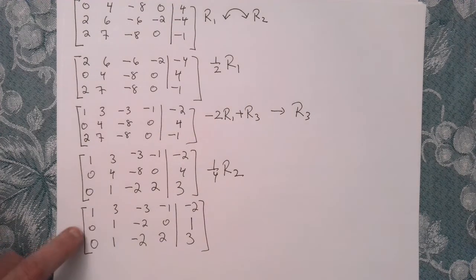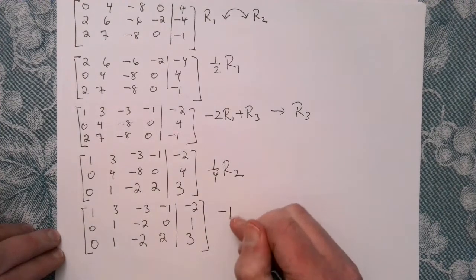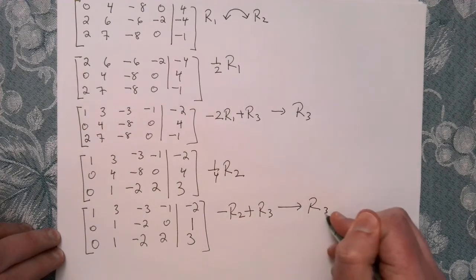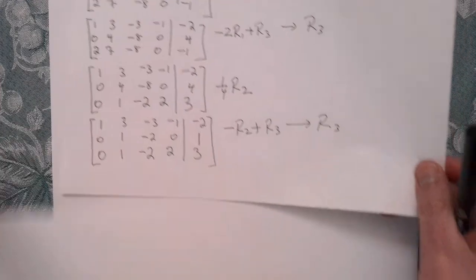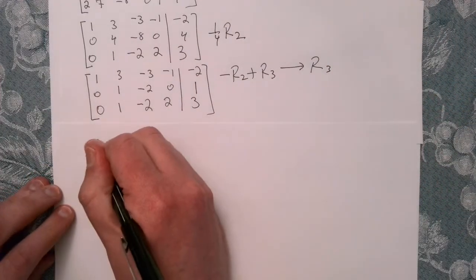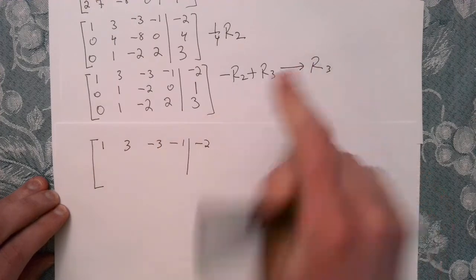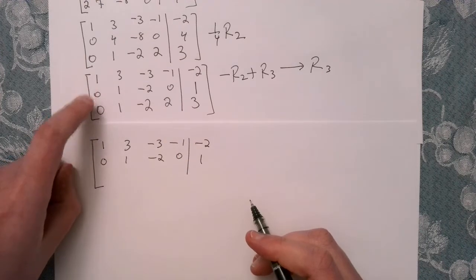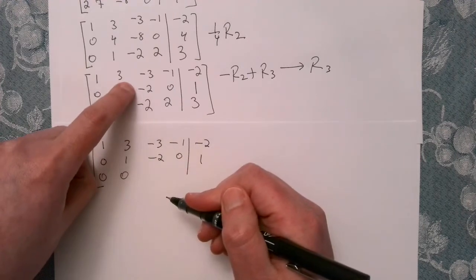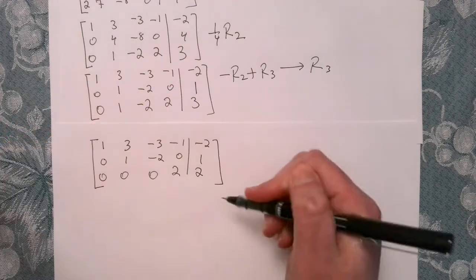We've got our pivot — our leading 1 for row 2. Now we're going to use that to clear out the entry underneath. We'll do negative row 2 plus row 3, and that sum replaces row 3. Row 1 and row 2 stay the same. For row 3: 0 plus 0, negative 1 plus 1, 2 minus 2, 0 plus 2, and negative 1 plus 3.